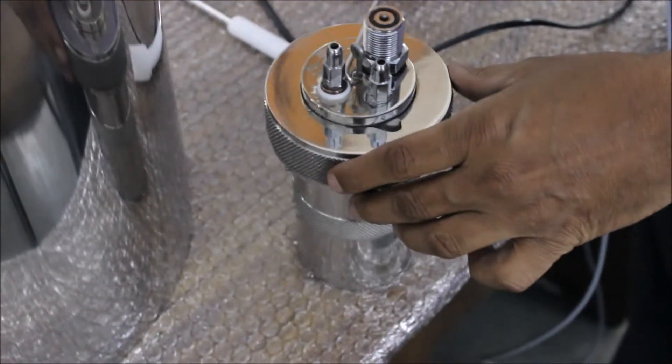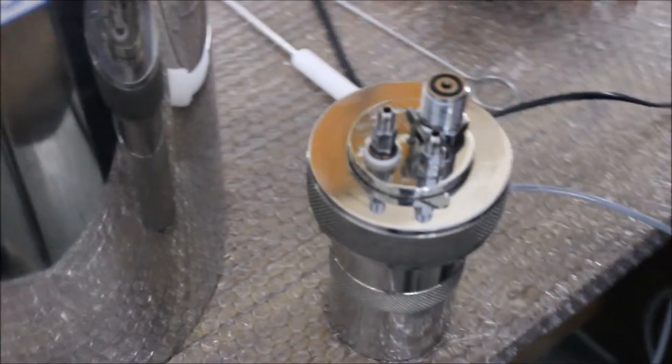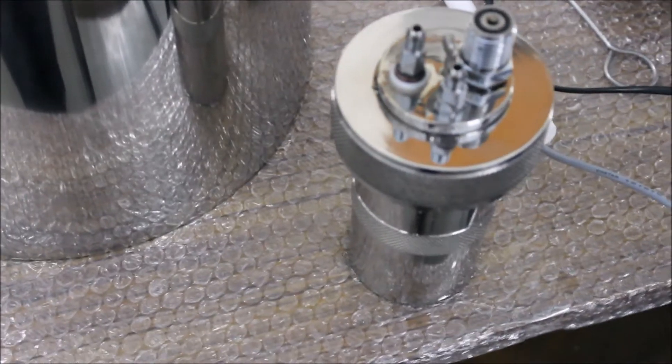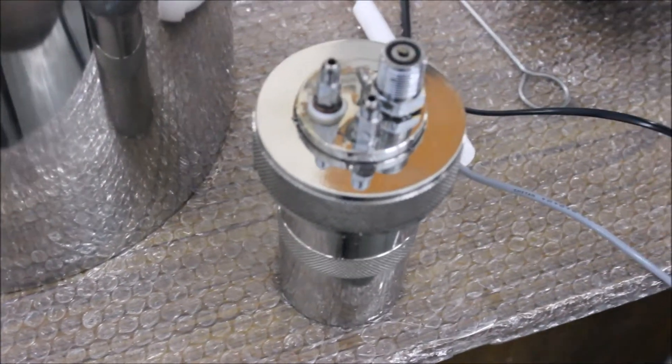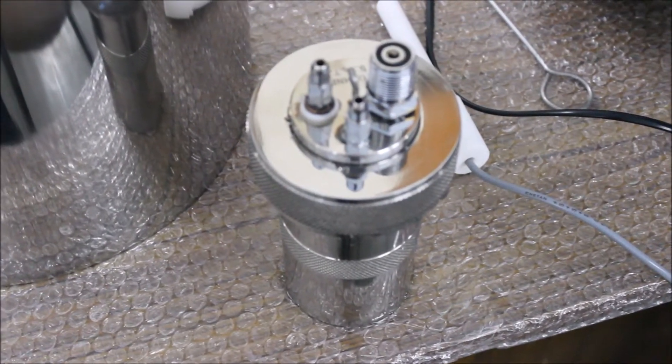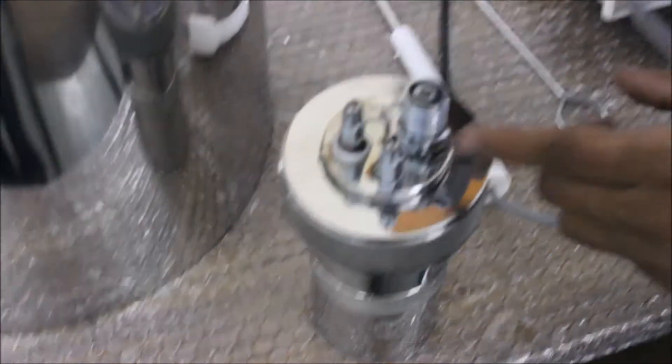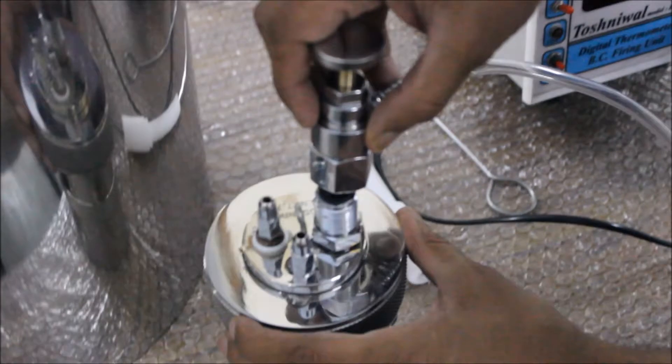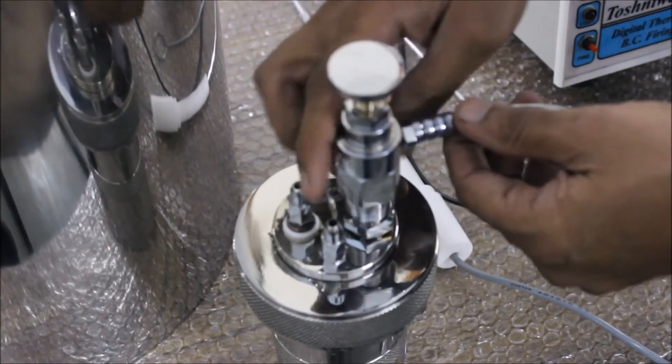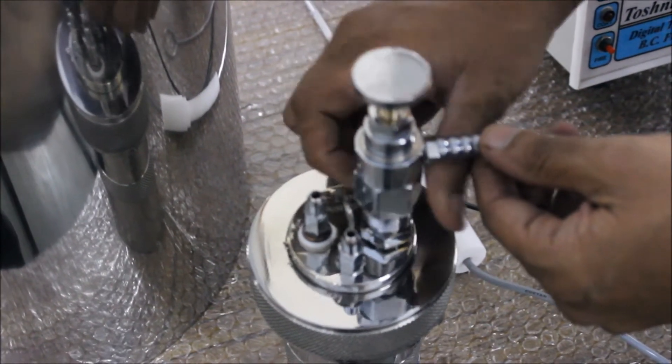Please note, there is still high pressure inside the combustion bomb and we will need to release that. To do so, we will use the gas release valve. Simply screw in the gas release valve and tighten it by hand. No need to use the spanner.